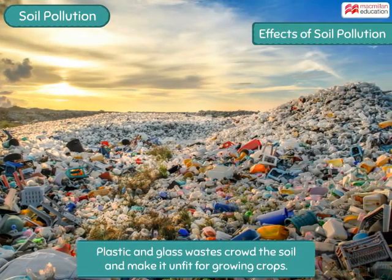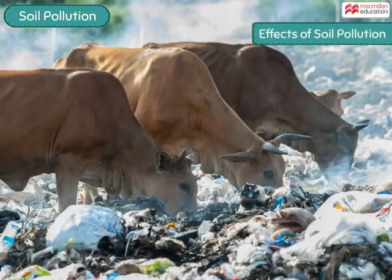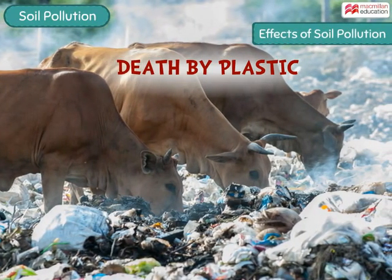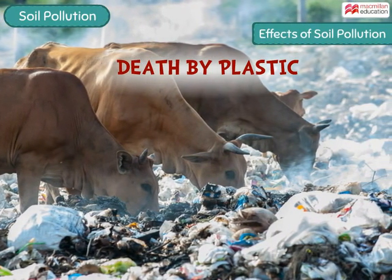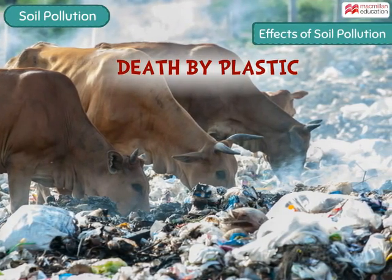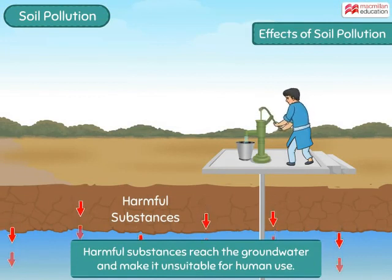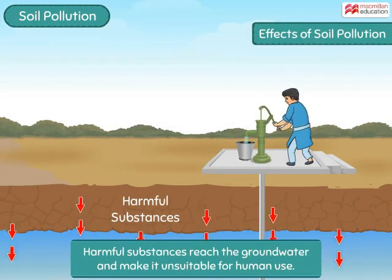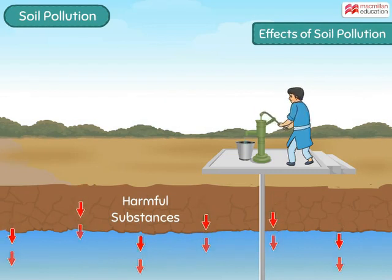Solid wastes like plastic and glass crowd the soil. Animals sometimes ingest plastic waste accidentally or thinking it as food, and many animals die due to this reason. These harmful substances gradually reach the groundwater under the soil and make the water unsuitable for human use.